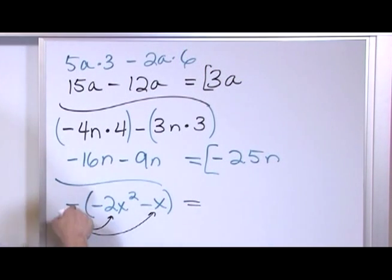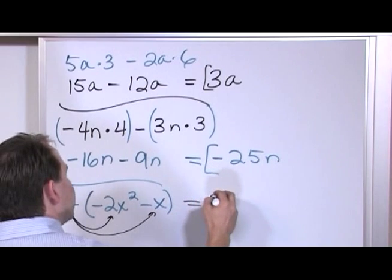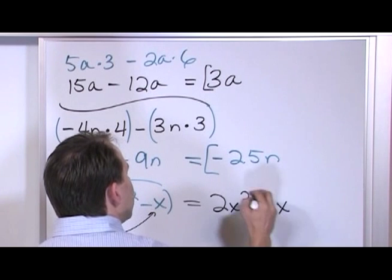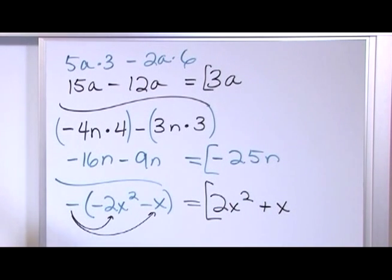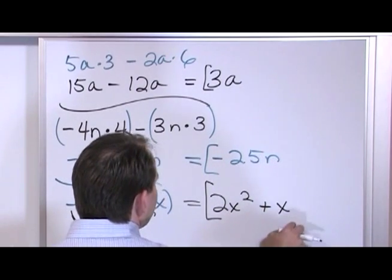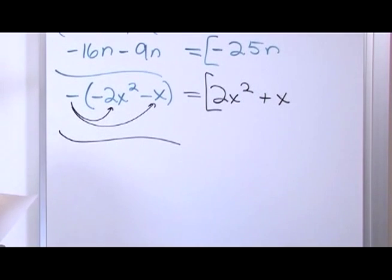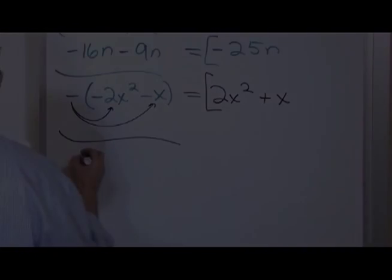So what I'll get is negative times negative gives me positive 2x squared. Negative times negative gives me positive x. And that's all you can do. You can't really do anything more than keep it as 2x squared plus x because these are not like terms, so I cannot add them together. It's really important to keep straight about the like terms and so on.